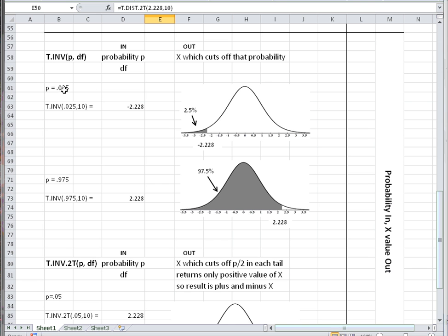For example, for 2.5% in the left-hand tail, the t value that cuts that off is minus 2.228. If we put in 97.5%, the t value that cuts off 97.5% to the left is 2.228 positive.